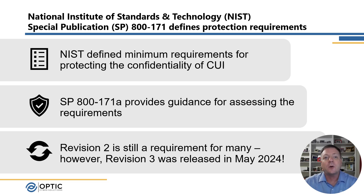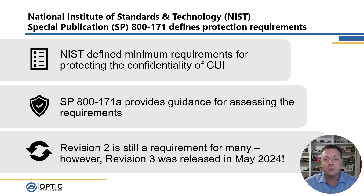If you are required to meet the SP800-171 requirements, you'll likely also need to be aware of Special Publication 800-171-A, Assessing Security Requirements for Controlled Unclassified Information. 171-A provides guidance for evaluating whether or not you've met the intent of the requirements in 171. As you implement the security requirements in 171, you can leverage the assessment objectives in 171-A to ensure that you have implemented all facets of the requirement.